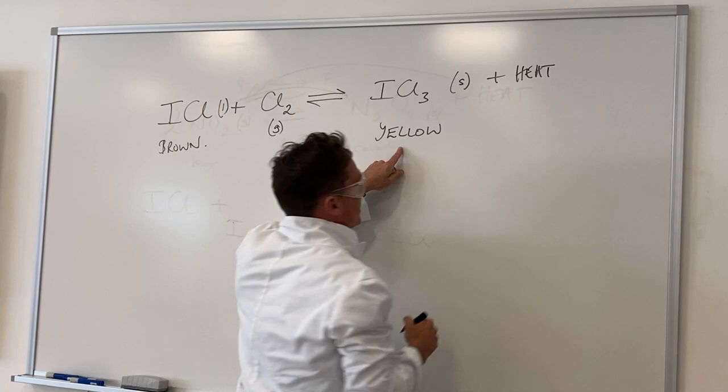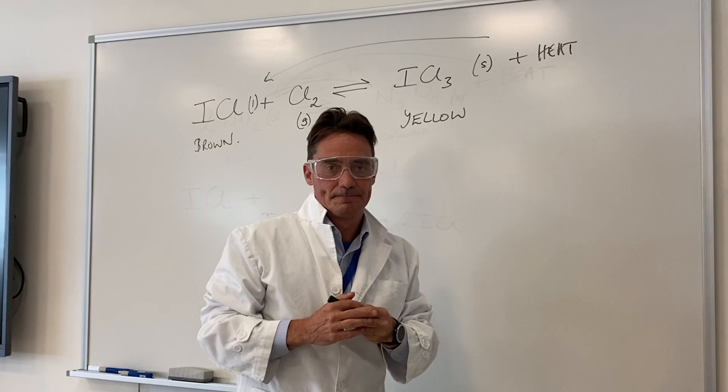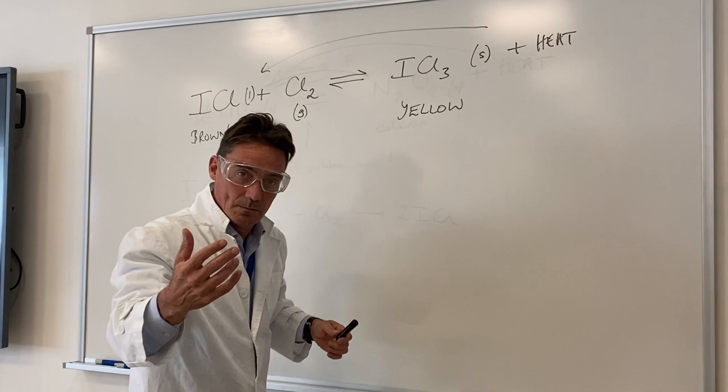If I add heat to the yellow stuff, it's gone brown, hasn't it? And I've moved the equilibrium over to the left hand side. So the forward reaction is exothermic, i.e. it gives off heat.